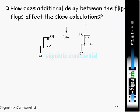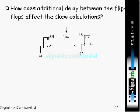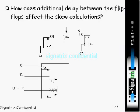If you look at the previous example, we don't have anything between the two flip-flops. But now we are going to have one additional combinational logic block between the flip-flops, and we want to see how this affects the maximum allowable skew. Here the scenario is C2 is skewed after C1. If skew is not there, both flip-flops receive the clock at the same time, but because of that skew the clock arrives later at the second flop.